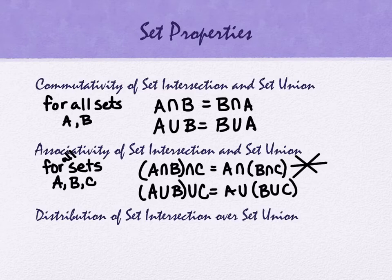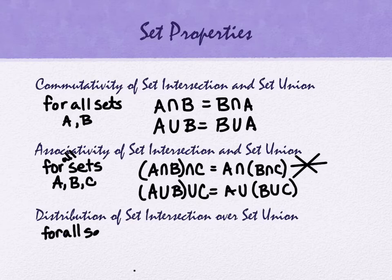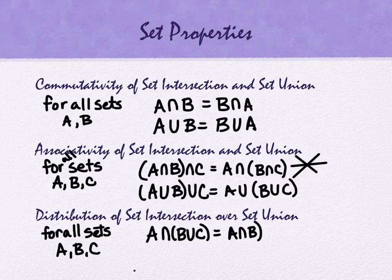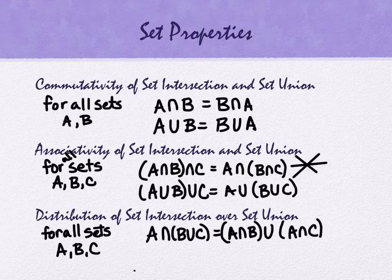And the last one is the distribution. And that is the way that we can combine the ideas of union and intersection together. So this is, again, for all sets A, B, C. If you take A intersect B union C, this is the same as A intersect B and then union that with A intersect C.